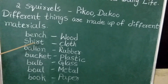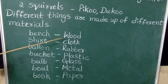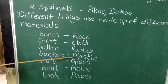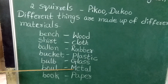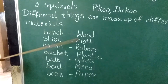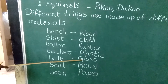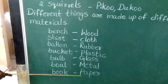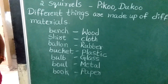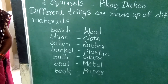See children, look at the board. How many kinds of materials are there finally? Wood, cloth, rubber, plastic, glass, metal, paper. Okay children, learn this lesson carefully. We will meet again in the next class. Thank you. Take care. Bye.